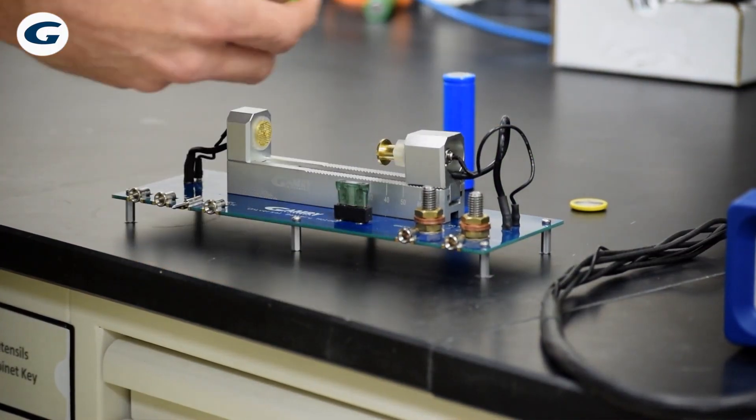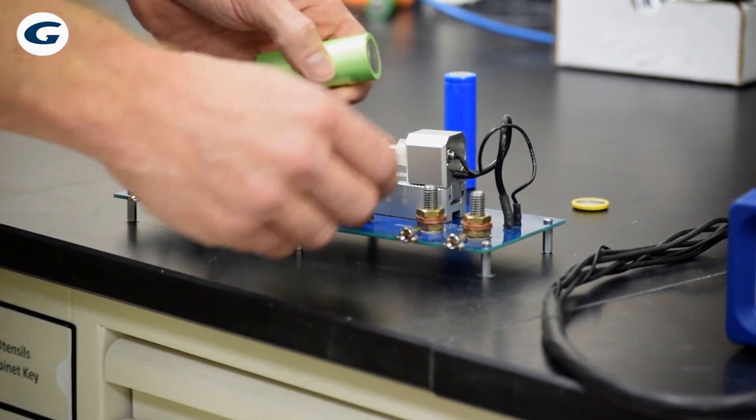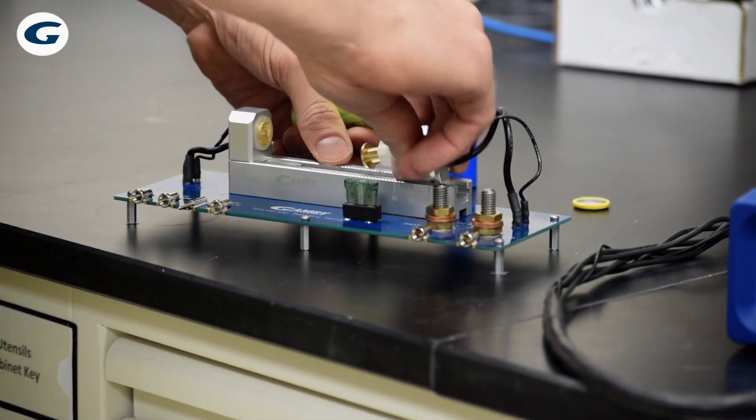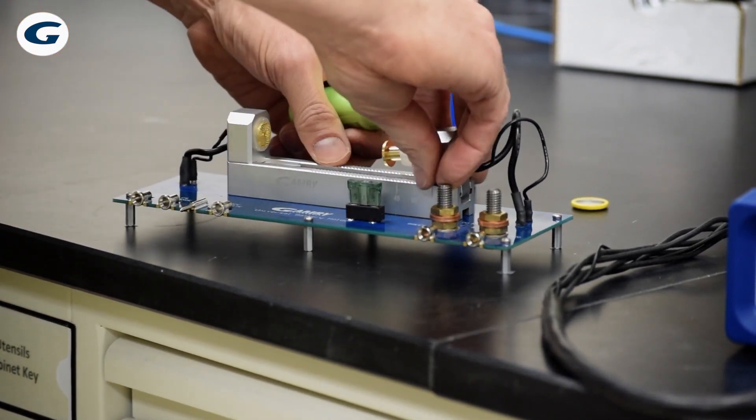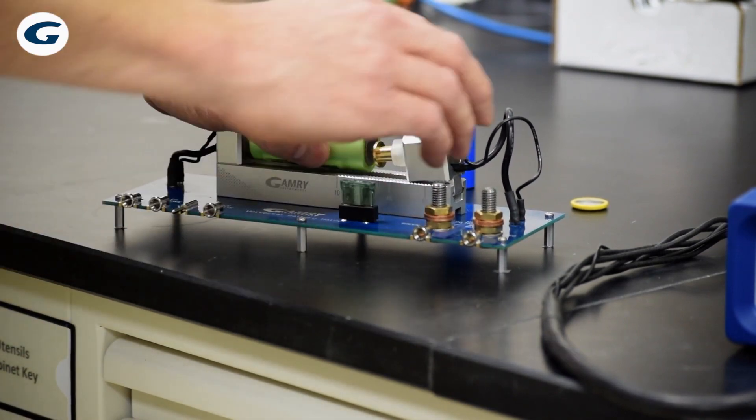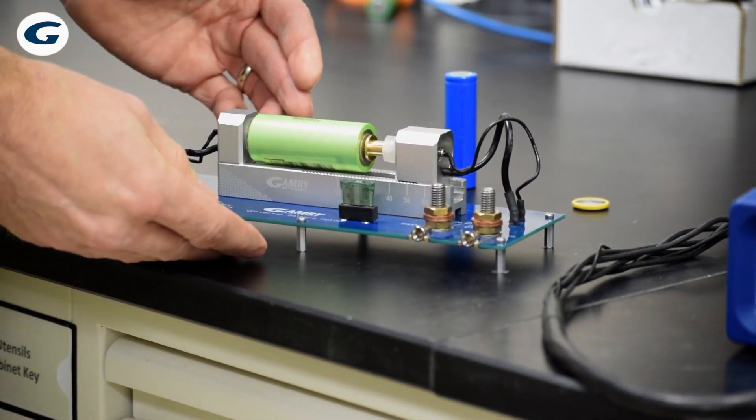We can mount any of these cells into the Universal Battery Holder by tilting this slider a little bit and sliding it forward or backward. We hold the cell in here, slide it forward and now it's mounted.